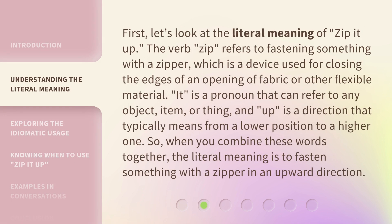First, let's look at the literal meaning of "zip it up." The verb "zip" refers to fastening something with a zipper, which is a device used for closing the edges of an opening of fabric or other flexible material. "It" is a pronoun that can refer to any object, item, or thing. And "up" is a direction that typically means from a lower position to a higher one. So, when you combine these words together, the literal meaning is to fasten something with a zipper in an upward direction.